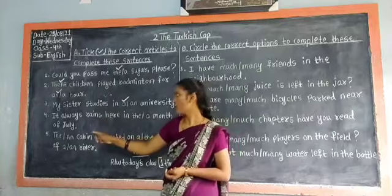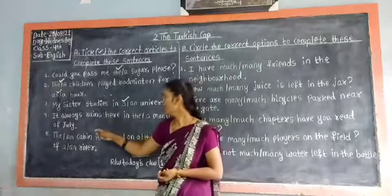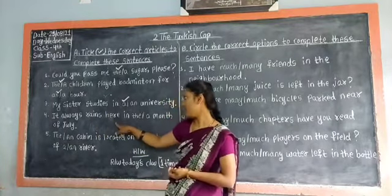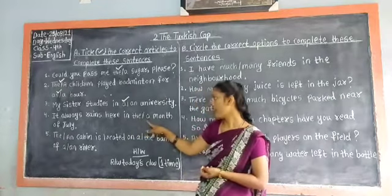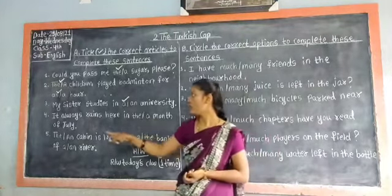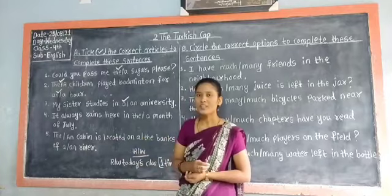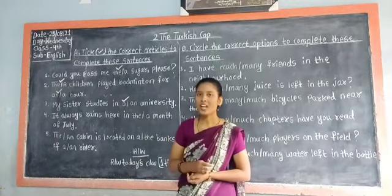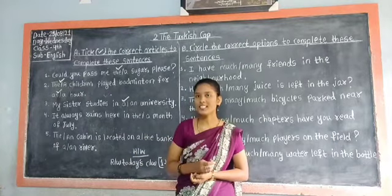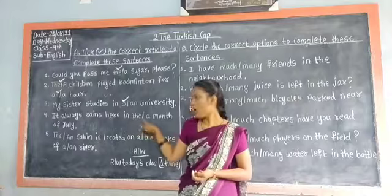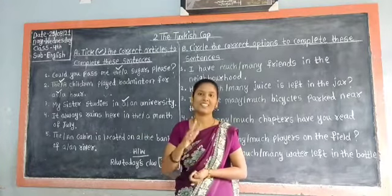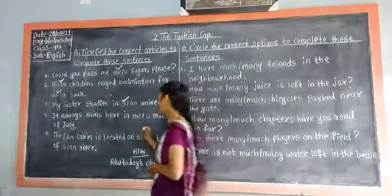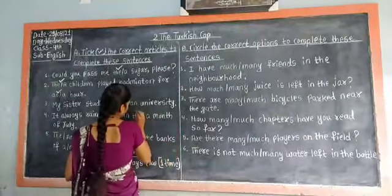Fourth sentence: it always rains here in the or a month of July. The correct answer is 'the.' Put tick to the article 'the.'